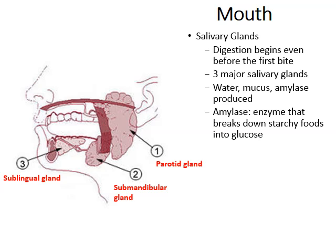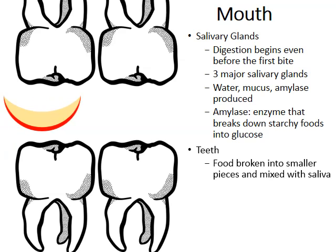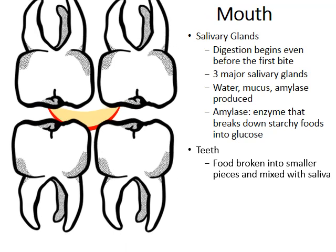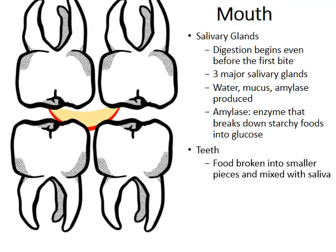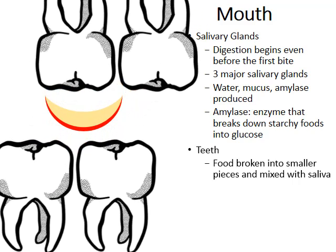Amylase is an enzyme that helps to break down the starchy foods we consume. The starch in the foods we eat is converted and broken down into glucose. The role of our teeth is to help break food into smaller pieces and also to mix the food with saliva. A small bite of an apple, as we chew it, is broken into smaller pieces and mixed with the saliva previously mentioned.